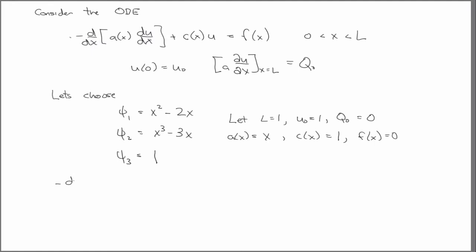So with that, we have d/dx of x du/dx plus u equals 0, or that implies, just applying the chain rule here, du/dx plus x d²u/dx² plus u equals 0, of course this is just 1, with u equal to 1 and x ∂u/∂x equal to 0 evaluated at x equal to 0.